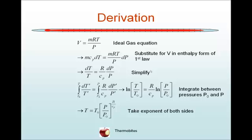And then if you take the natural exponent of both sides and move T₀ to the right-hand side of the equation, you obtain T = T₀(P/P₀)^(R/cₚ).